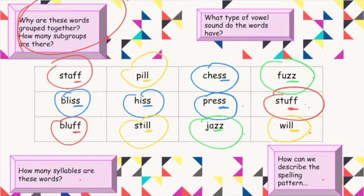What type of vowel sounds do the words have? Staff — short A. Bliss — short I. Bluff — short U. Press — short E. Fuzz — short U. They are all short vowel sounds. Not a coincidence!